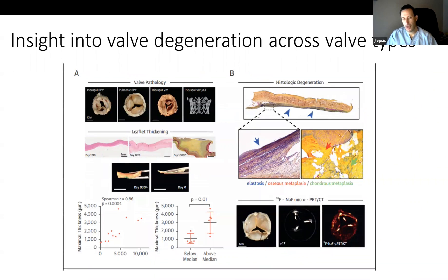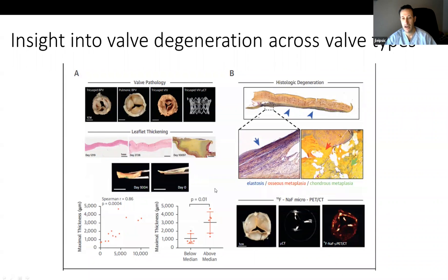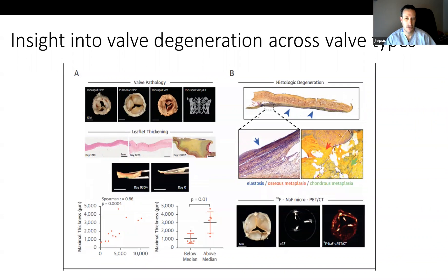We can also learn from the pathology of right-sided valves. Looking at explanted tricuspid and pulmonic valves, the patterns of valve degeneration are quite different from left-sided valves — they don't have the same microcalcification or lipid deposition, but rather elastosis and different patterns of degeneration. This highlights that we need to continue working in a multidisciplinary fashion with our pathologists, metabolic imagers doing sodium fluoride work, and functional imagers doing echo, combined with our anatomical findings from CT to better understand these imaging signatures.